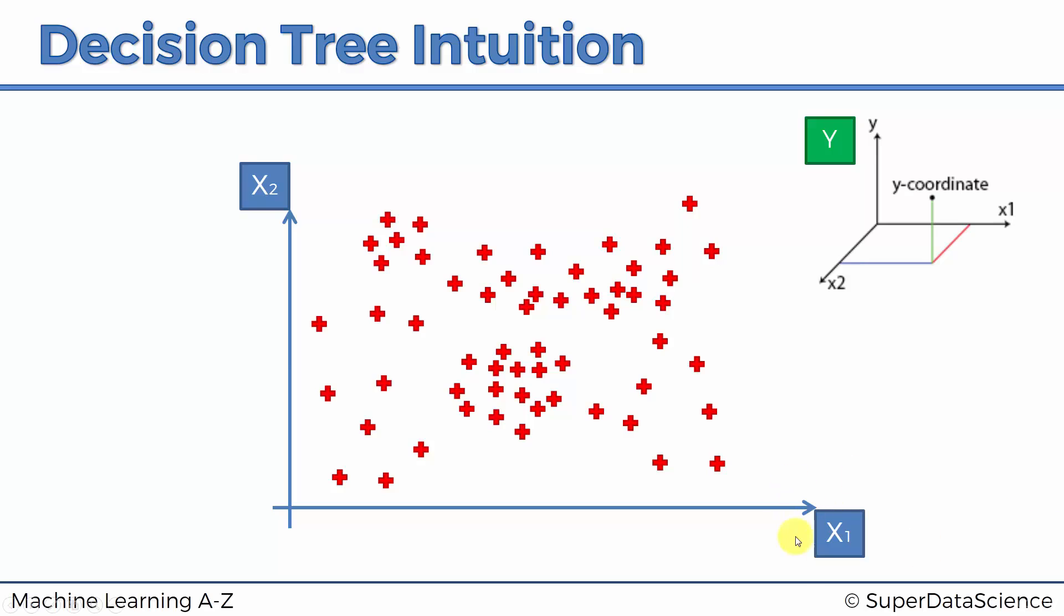We've got x1 and x2, these are independent variables. The dependent variable we cannot see, it's the third dimension, and we're actually going to forget about it for a little while because we need to work with this scatterplot to see how our decision tree is going to be created. So once you run the regression tree or decision tree algorithm in the regression sense of it, what will happen is your scatterplot will be split up into segments. Let's have a look at how an algorithm could go about doing that.